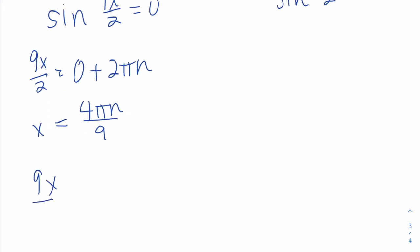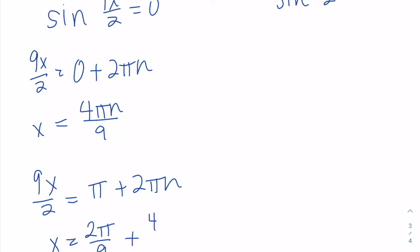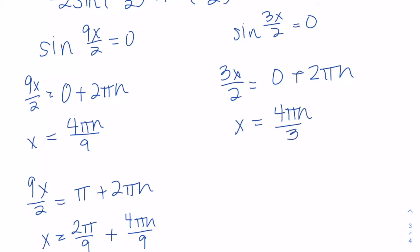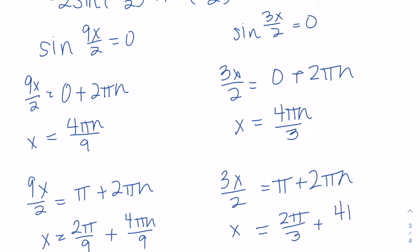The second solution for sine of 9x/2 is 9x/2 = π + 2πn, so multiplying by 2/9 gives x = 2π/9 + 4πn/9. For the second factor, sine of 3x/2 = 0: 3x/2 = 2πn gives x = 4πn/3, and 3x/2 = π + 2πn gives x = 2π/3 + 4πn/3. So we have four solution families.